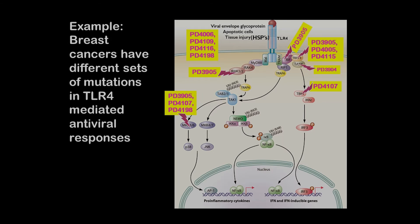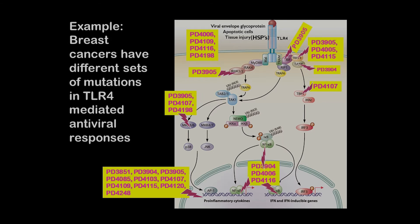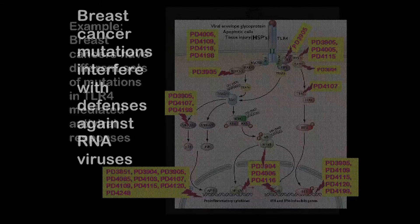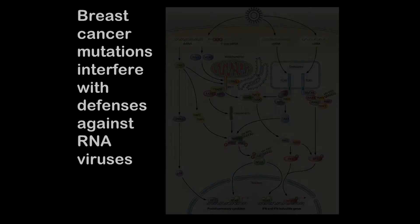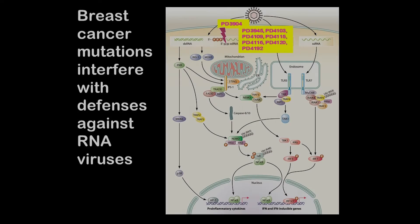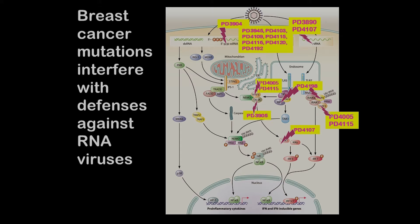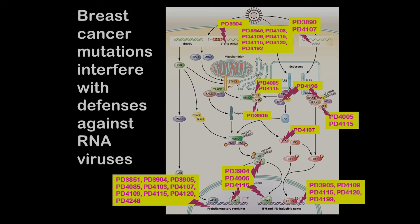Defenses against RNA viruses are another example of how the innate immune system is damaged in breast cancers. There are many other examples, but they all show that mutations have damaged defenses against infections.